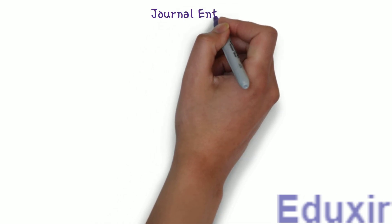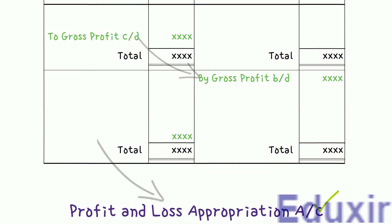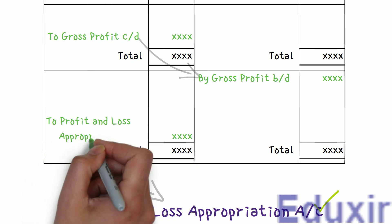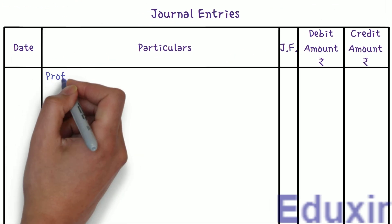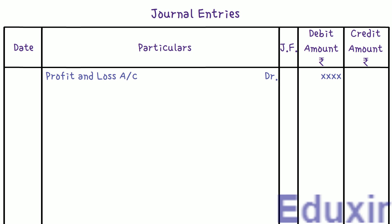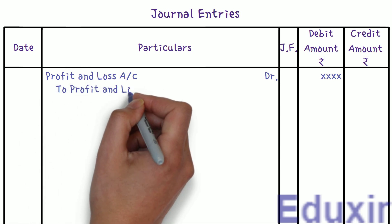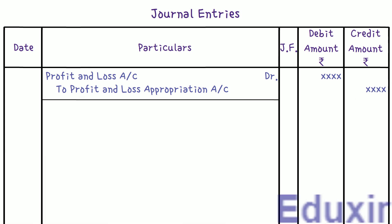Let us now look at the journal entries for each of the adjustments in the profit and loss appropriation account. First, let us see how we transfer the balance of the profit and loss account to the profit and loss appropriation account. If the profit and loss account has a credit balance, it represents the net profit. For transferring this credit balance, we debit the profit and loss account. The corresponding credit entry is in the profit and loss appropriation account.